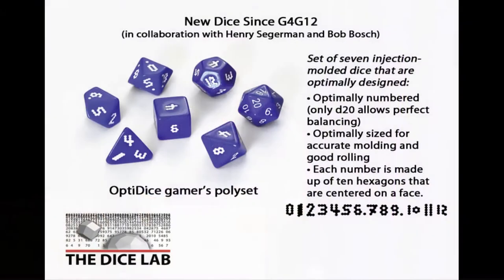We have something called OptiDice. These are optimally designed for injection-molded dice as regards the size of the dice, the distribution of numbers, and also the numerals themselves are made up with ten hexagons — the same amount of material is taken out of each face.